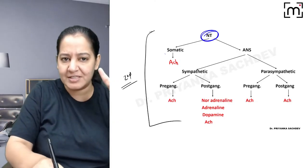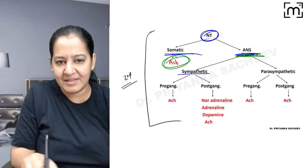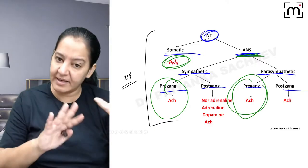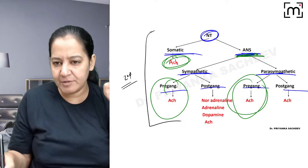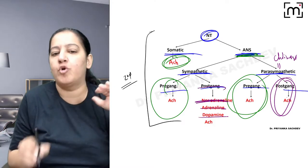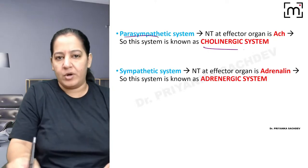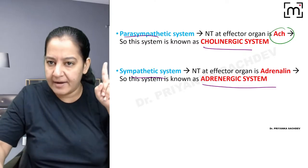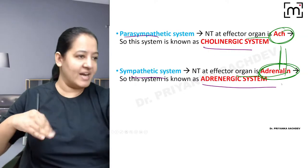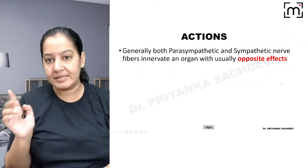To summarize neurotransmitters: In somatic — always acetylcholine, only one required. In autonomic — two neurons, two neurotransmitters. Pre-ganglionic always acetylcholine in both systems. Post-ganglionic differs: in parasympathetic it is acetylcholine (hence cholinergic), in sympathetic it is noradrenaline, sometimes adrenaline or dopamine (hence adrenergic). Draw a comparison table: write distribution, neurotransmitter, ganglion position, and actions for both parasympathetic and sympathetic.